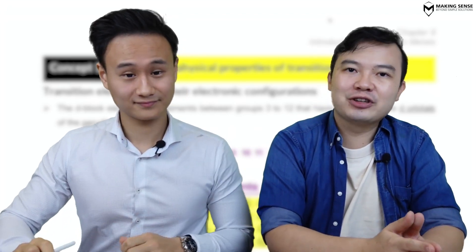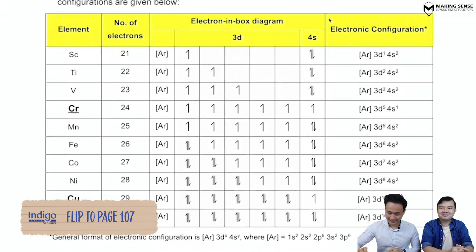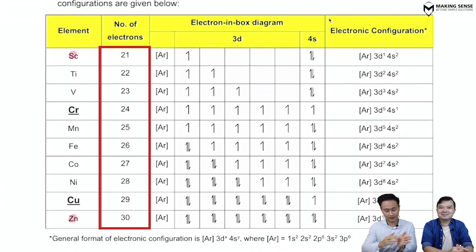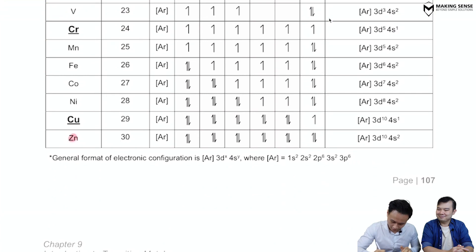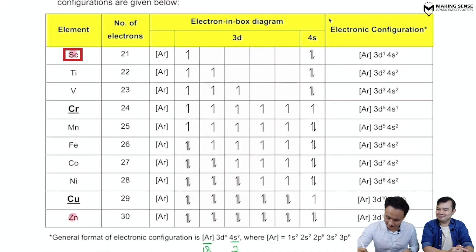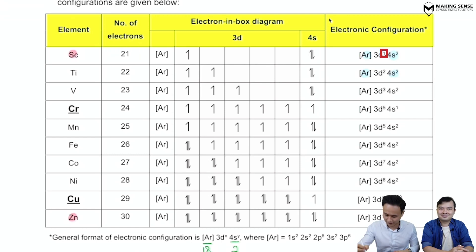The d-block elements are this part of the periodic table, going from scandium all the way to zinc — ranging from 21 electrons to 30 electrons. There's a general format for writing electronic configuration: [Ar] which is 18 electrons, and 4s2 which is 2 electrons, totalling 20. So scandium is [Ar] 4s2 3d1 — 21 minus 20 is one extra electron into the 3d orbital. Same thing for titanium and vanadium.